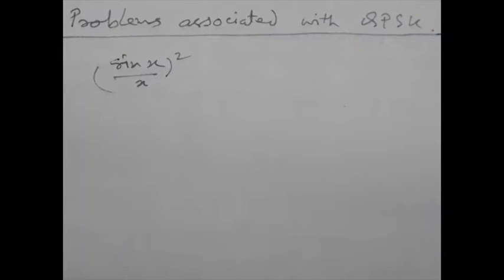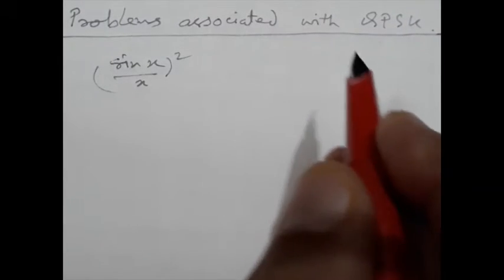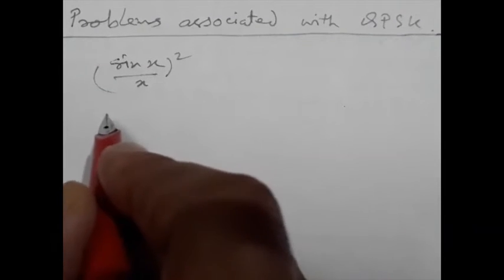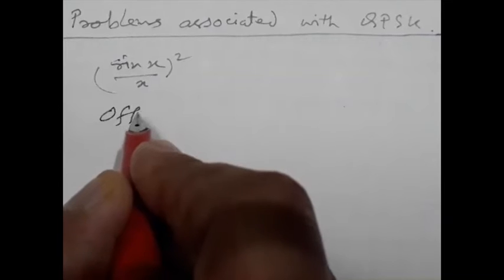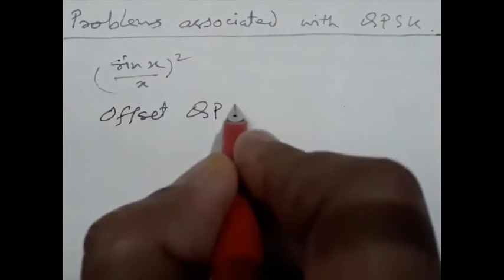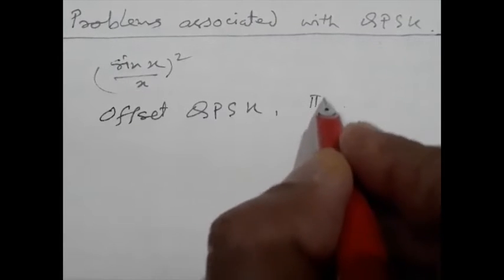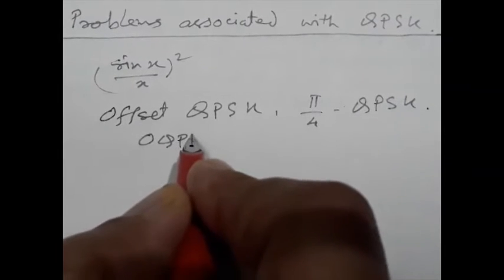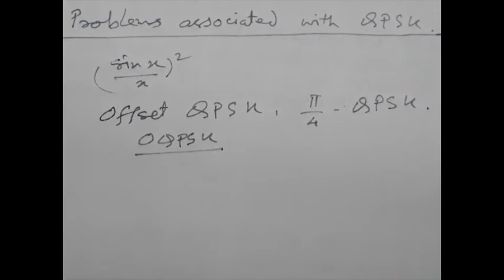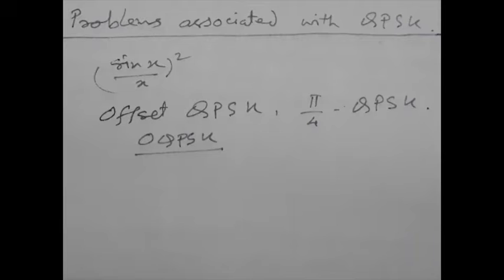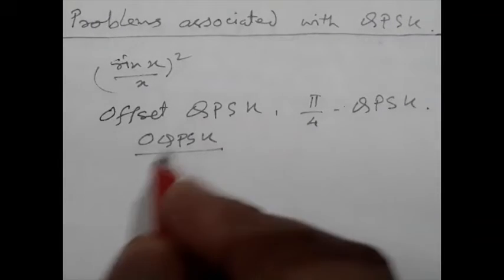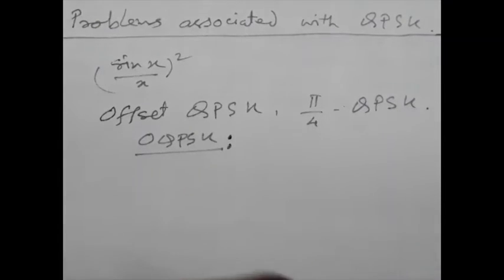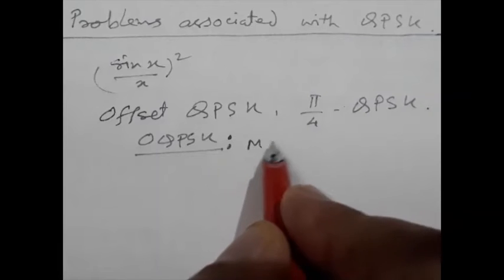Now, there are certain solution of this problem. So, instead of using the conventional QPSK, we can use offset QPSK or there is another way pi by 4 QPSK. This is also called OQPSK. And this one is called the pi by 4 QPSK.